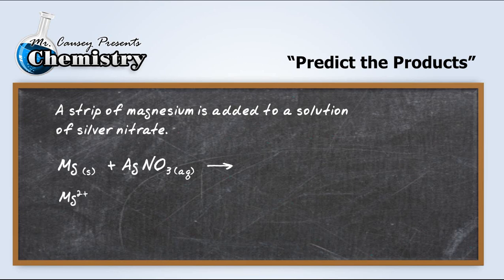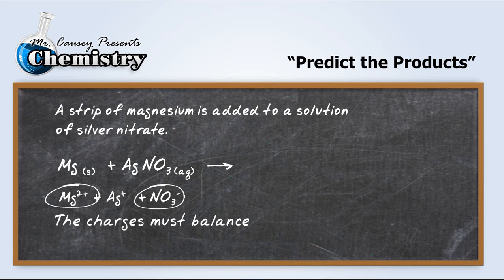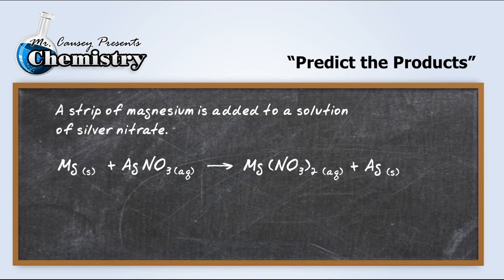So we have magnesium and we have silver and nitrate. The two ions that are combined here are going to be the magnesium and the nitrate, but we also need to remember the charges must balance. So we're going to need to add another nitrate ion, and there's our magnesium nitrate. And we're going to have silver is going to precipitate out, and we realize that that's a single replacement reaction.